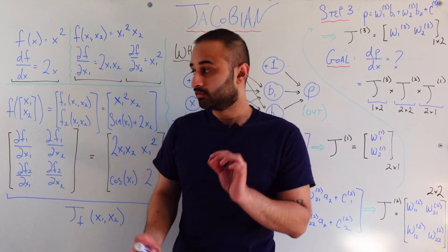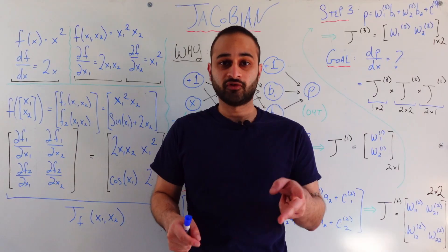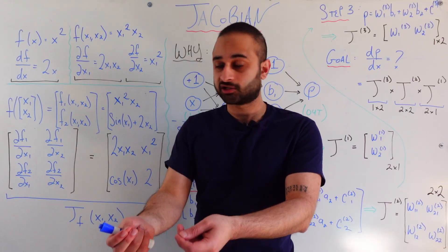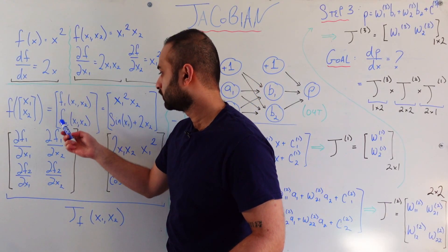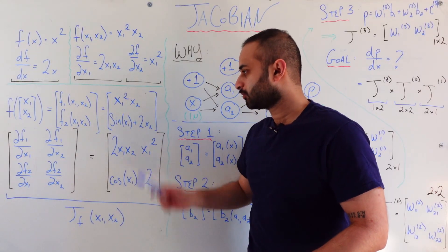But the difference here between this and this case is that this function f is really two functions. So it's a function that takes in a vector, x1 and x2, and it also outputs a vector, which is f1 of x1 x2 and f2 of x1 x2. And explicitly it's given here. That's the mathematical formulation.